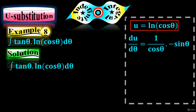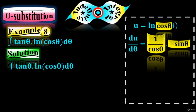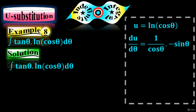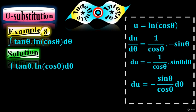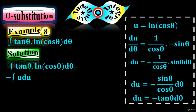When you take the derivative of ln(cos(θ)), it becomes 1 over cos(θ) times the derivative of cos(θ), which is negative sin(θ). Rearranging, du equals 1 over cos(θ) times sin(θ) dθ. Since sin(θ) over cos(θ) equals tan(θ), we have du = tan(θ) dθ. Replace ln(cos(θ)) by u and tan(θ) dθ by du.